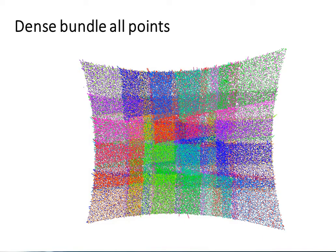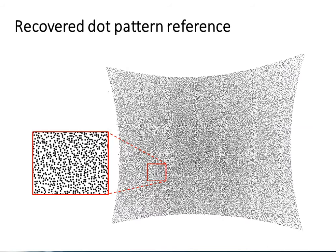The pose parameters obtained for a sampled subset are used to initialize a final dense bundle adjustment over all points. The result is the recovered emitter dot pattern layout along with the intrinsic parameters of the fixed camera.